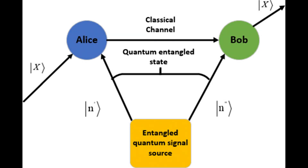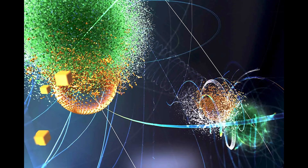Quantum teleportation is a process that allows the transfer of quantum information between two particles without physically moving the particles themselves. Unlike the teleportation we see in science fiction, quantum teleportation doesn't involve moving objects from one place to another.